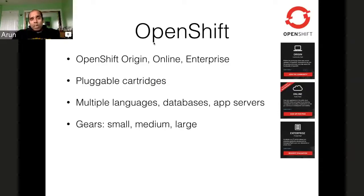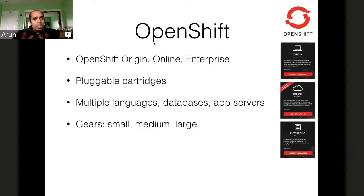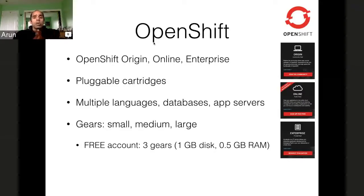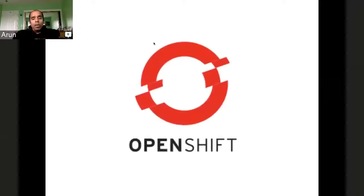The way OpenShift works is the concept of gears — a gear is compute capacity or disk capacity that you get. There are three kinds of gears in OpenShift: small, medium, and large. If you sign up for a free account on openshift.com, you get three gears, and each gear is one gig of disk space and half a gig of RAM. On one gear you can install an app server, on another a database server, and on a third a continuous integration tool like Jenkins.